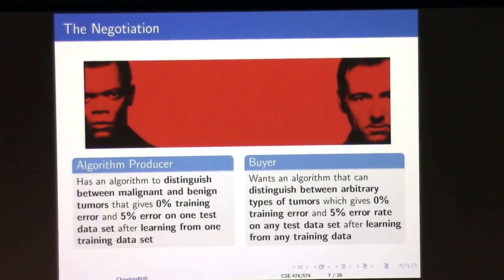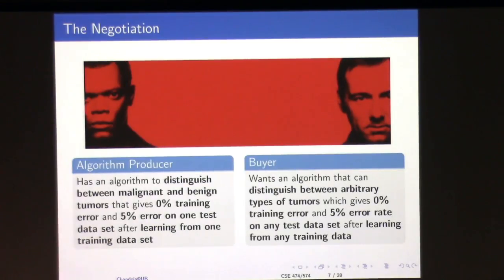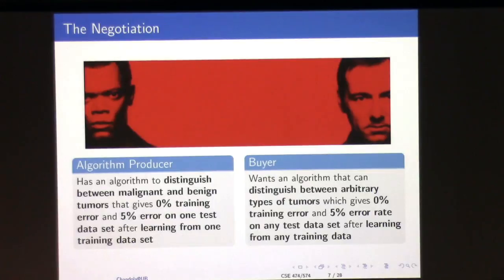Let me explain this through a story. There are two people: a producer who is selling an algorithm, and a buyer who needs one — there's a negotiation going on. The algorithm producer claims he has a binary classifier that distinguishes malignant from benign tumors, with zero percent training error and only five percent error on one test data set after learning from one training data set.